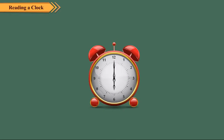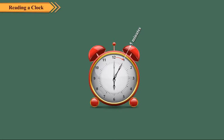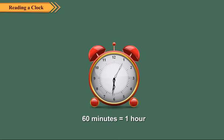The shorter hand is called the minute hand. It moves slower than the second hand. It takes 5 minutes to move from one number to another. It completes one round of the dial in 60 minutes or 1 hour.